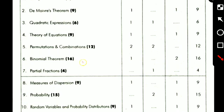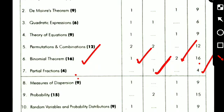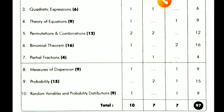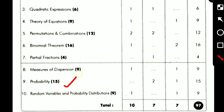Coming to the next topic, binomial theorem, the weightage is: one 2-mark question, two 7-mark questions, 14 plus 2, total equals 16. From partial fractions, only one 4-mark question will come, total equals 4 marks. From measures of dispersion: one 2-mark question, one 7-mark question, total equals 9 marks. From the next topic, probability, total weightage equals 15 marks. The questions are: two 4-mark questions and one 7-mark question, total equals 15.